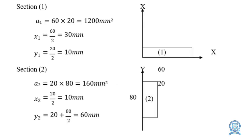We take the lower portion as section 1. For section 1: a1 = 60 × 20 = 1200 mm². The centroidal x value x1 = 60/2 = 30 mm, since the total width is 60. The centroidal y value y1 = 20/2 = 10 mm. For a rectangle, the centroid is at L/2 and b/2, so we apply that directly to get x1 = 30 mm and y1 = 10 mm.